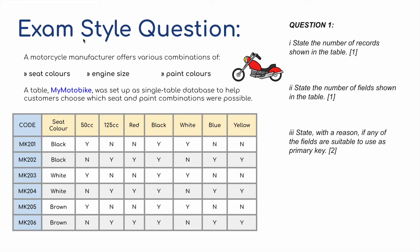We have an exam-style question. A motorcycle manufacturer offers various combinations of seat colours, engine sizes, and paint colours for their motorbikes. A single-table database called mymotorbike was set up to help customers choose which seat and paint combinations were possible. The table has codes, seat colours — black, white, or brown — engine sizes of 50cc or 125cc, and different paint colours showing whether each is available as yes or no.